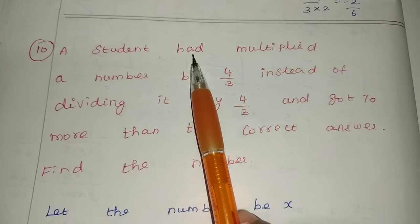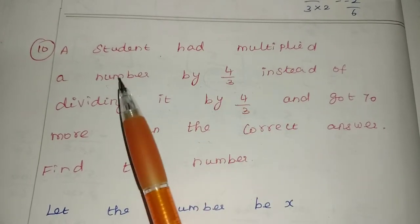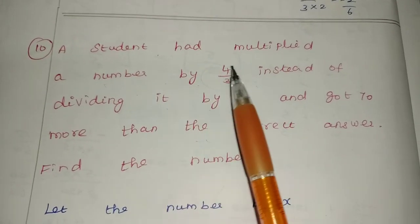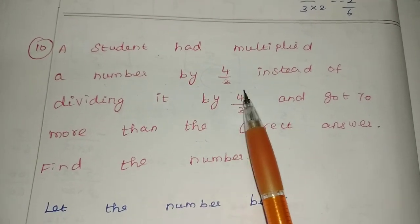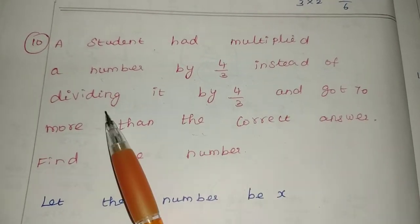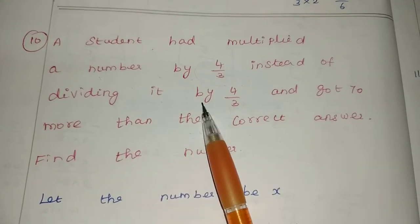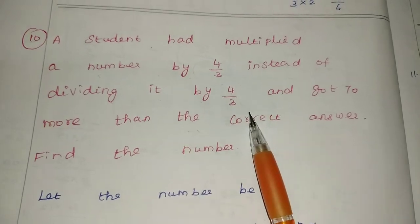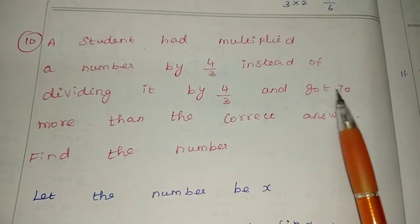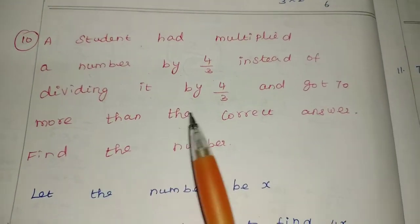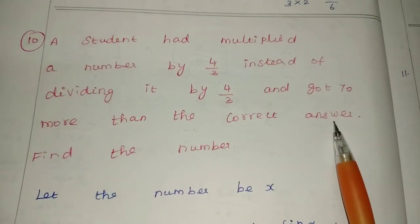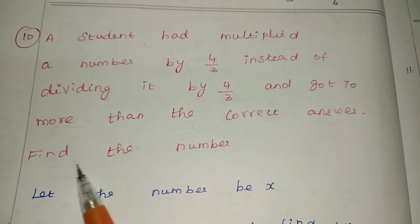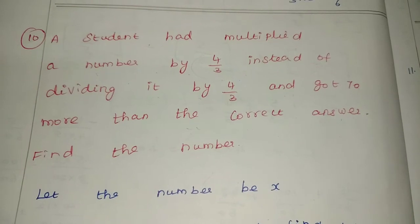A student had multiplied a number by 4/3 instead of dividing it by 4/3, and got 70 more than the correct answer. Find the number.